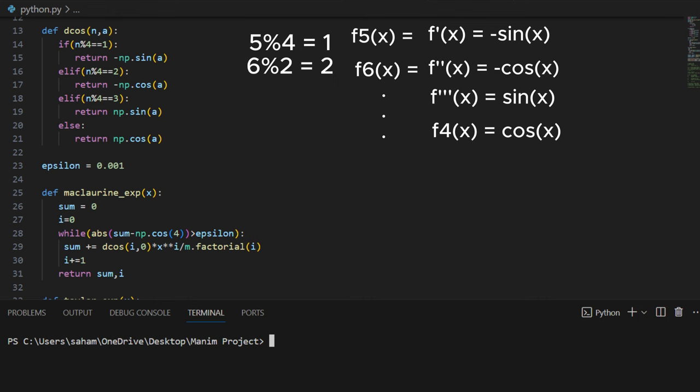For instance, when n modulo 4 equals 1, it computes negative sine of a. Similarly, for n modulo 4 equals 2, it computes negative cosine of a and so on.